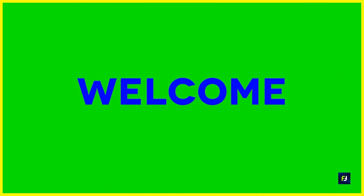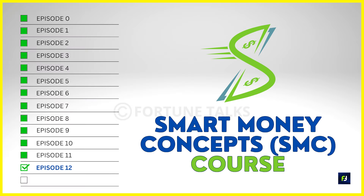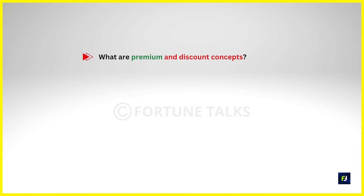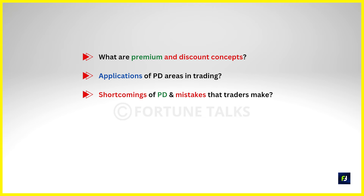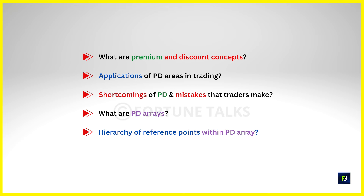Hello traders, welcome back to another episode of the free Smart Money Concepts course. In this video, we will delve into the premium and discount concepts, exploring their application in trading and how they can enhance decision making. We will also talk about the common mistakes that traders make, and finally we will discuss PD arrays and the hierarchy of different reference points within the PD array. Understanding these concepts can help traders refine their entry and exit points, thereby maximizing the potential for profitable trades. Watch this video till the end to get a proper grip of the entire concept.